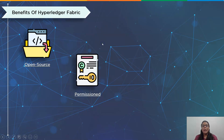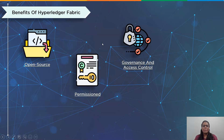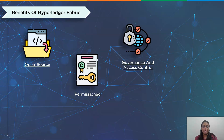The third benefit is governance and access control. Fabric networks are made up of channels, which are private subnets of communication between two or more particular network members. Through these channels, network users can conduct confidential and private business. Every transaction on the blockchain network takes place on a channel, where each person involved must be verified and given permission to conduct business. This adds an extra degree of access control and is particularly helpful when members want to restrict how much information is made public, for instance when rivals are on the same network.